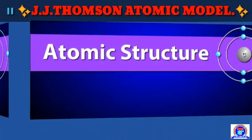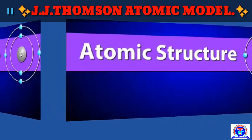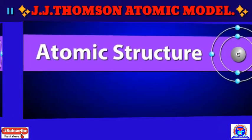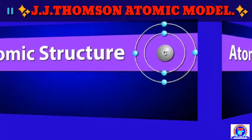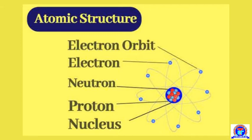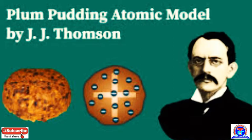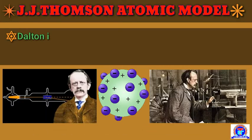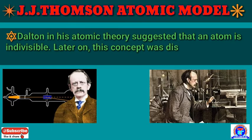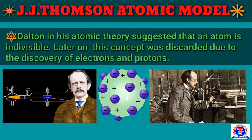Hello dear students, we come back to atomic structure. In this chapter we have discussed different parts, and here the new topic we bring for you is the Thomson atomic model, also very well known as the plum pudding model. In this atomic theory it was suggested that an atom is indivisible.